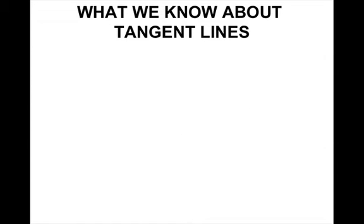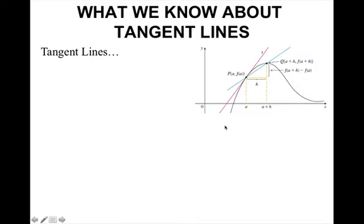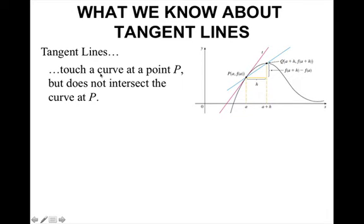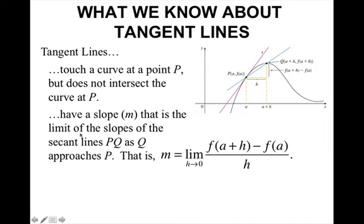So what we currently know about tangent lines? We know that tangent lines touch a curve at a point P, but do not intersect the curve at point P — so this pink line right here. Tangent lines have a slope M that is the limit of the slopes of the secant lines PQ as Q gets closer and closer to P. That is, M equals the limit as H approaches zero of F(A+H) minus F(A), all over H.